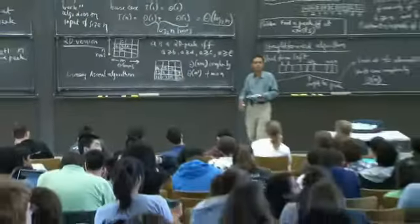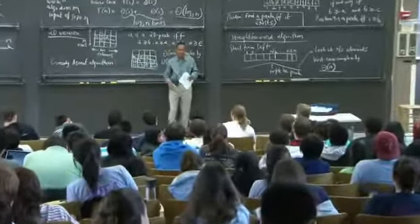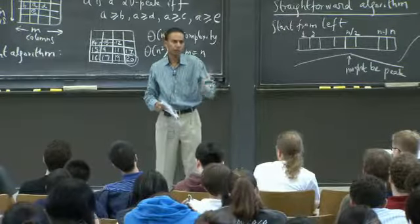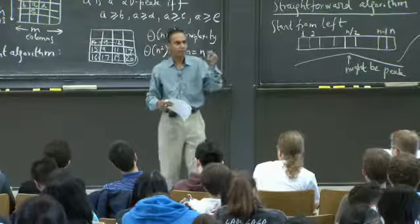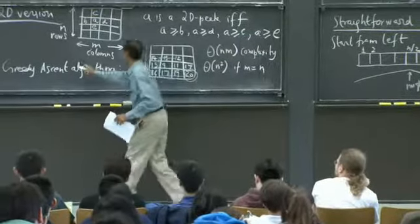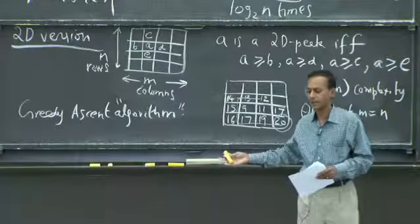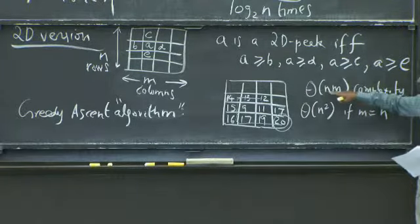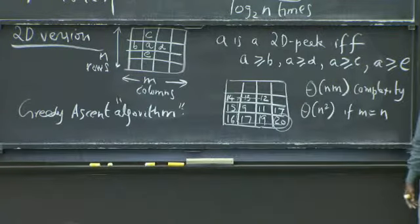A student asks: is theta(nm) an approximation or can you actually get that many traversals? There are specific greedy ascent algorithms and specific matrices where you can be made to touch all elements. When talking about worst case complexity you're being very paranoid. It's easy to achieve some constant times n times m, and that constant can be made very close to 1.